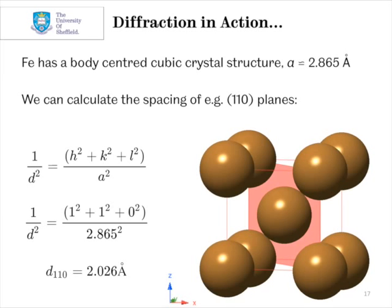And we can work out that the d-spacing for a (110) reflection from iron, body centered cubic, is about 2.026 angstroms.